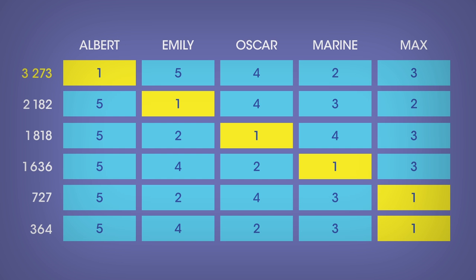With 3,273 votes, your opponents are crushed. Emily received about 2,000 votes only, as well as Oscar and Maureen, while Max got 727 plus 364, that is 1,091 votes. But do you really deserve to win, Albert? After all, most voters didn't pick you as their first choice. In fact, you're the last choice of each of these 6,727 voters.